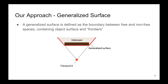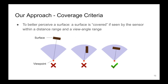Here we define the concept of a generalized surface to be covered by the sensor. It is defined as the boundary between free and non-free spaces. Note that the traditional frontier is defined as the boundary between free and unknown space. In our generalized surface definition, it contains both the frontiers and general object surfaces. The goal of the exploration algorithm is to cover all the generalized surfaces in the area of interest. For a point on the generalized surface to be considered covered, it needs to be within a distance and a view angle range. This ensures that the sensor can properly perceive the surface point. The images here show three cases where the first two do not fulfill the criteria because the surface is out of the distance or view angle range, while the rightmost image shows the desired case.